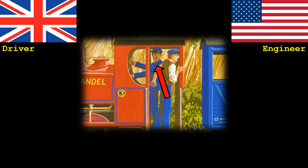All engines or locomotives require someone in the cab to drive them. In the UK this is quite simple — you just call it a driver. Steam engines will have an additional person on the footplate whose main responsibility is to ensure that the fire is burning nicely and the water pressure doesn't drop too low or get too high. The name of this position comes from their job role, stoking the fire. In the UK you would call them a fireman, in America you would call them a stoker.